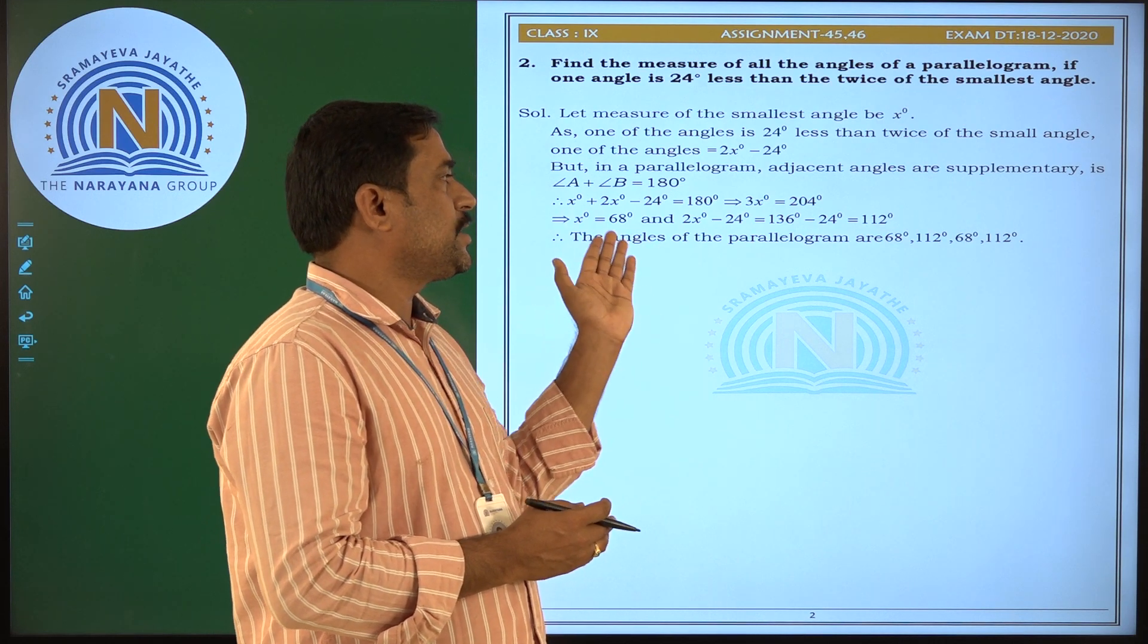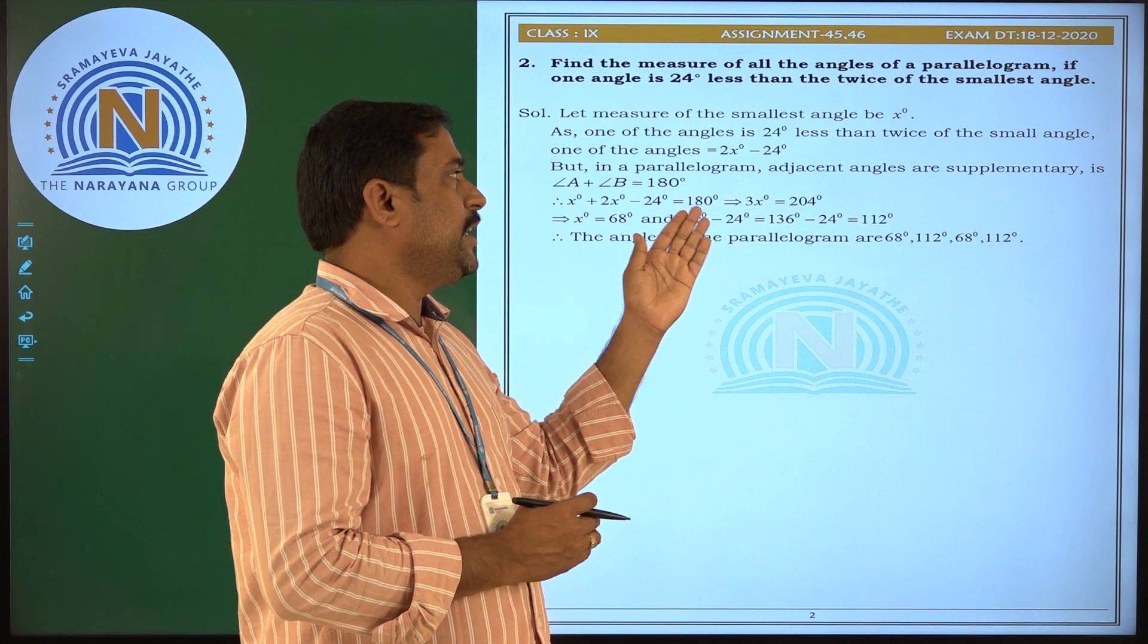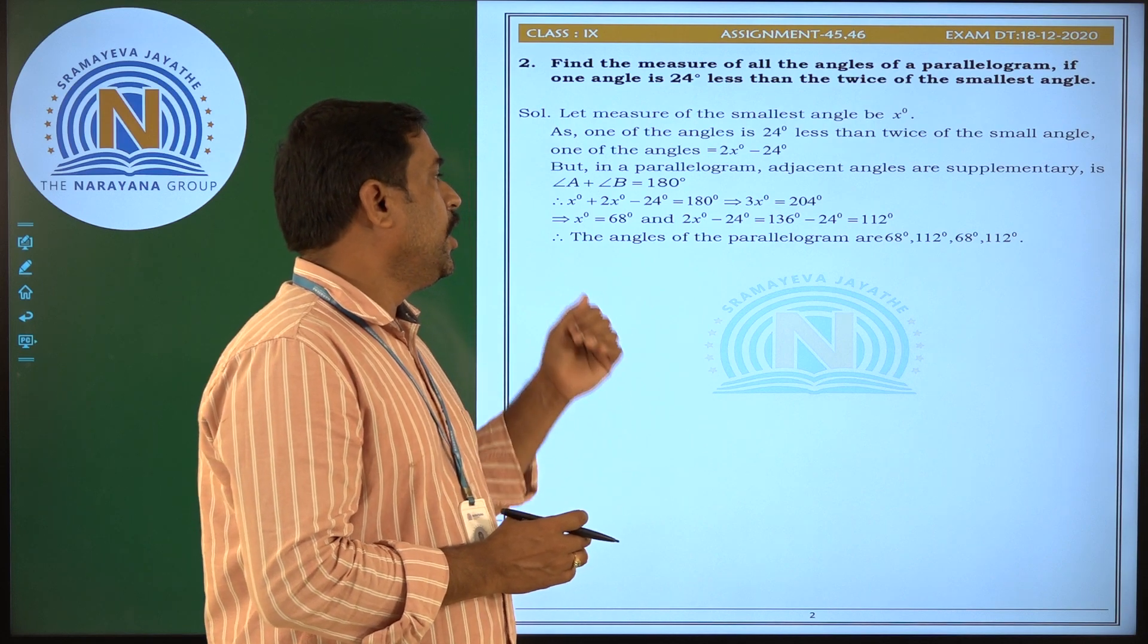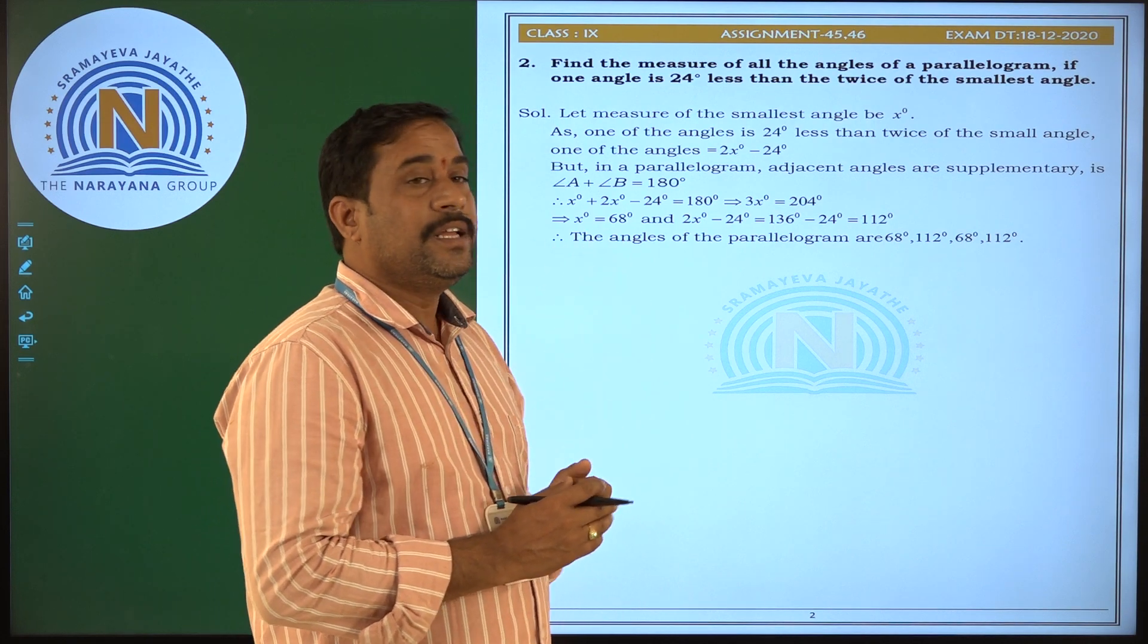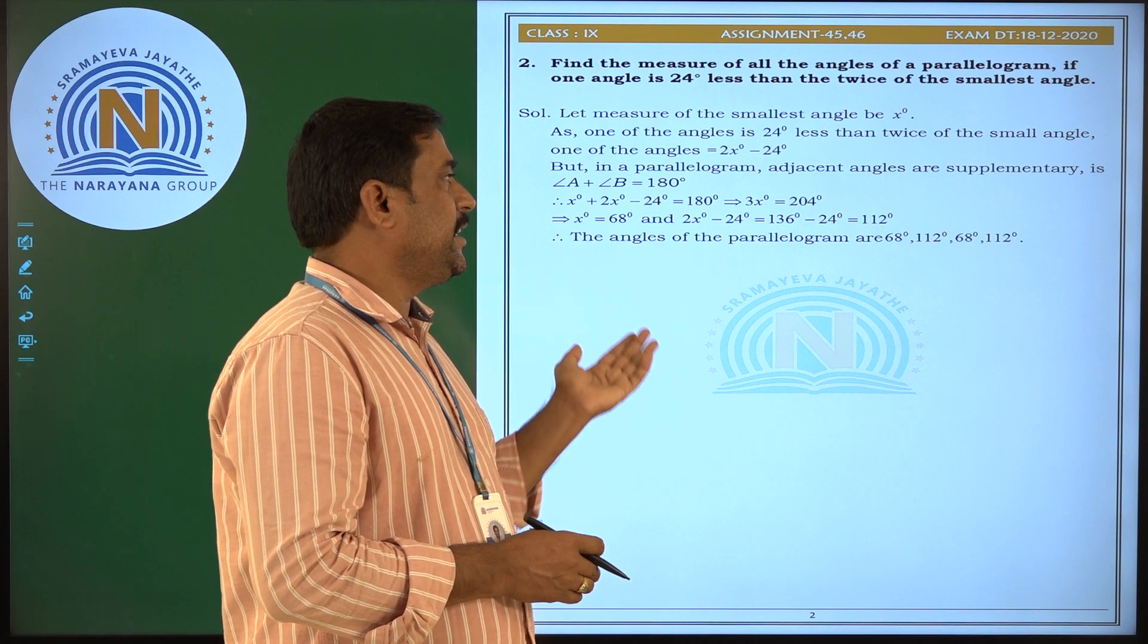Minus 24 goes to the right side, making it 204. So 3x equals 204, and x equals 68 degrees. So one of the angles is 68 degrees.